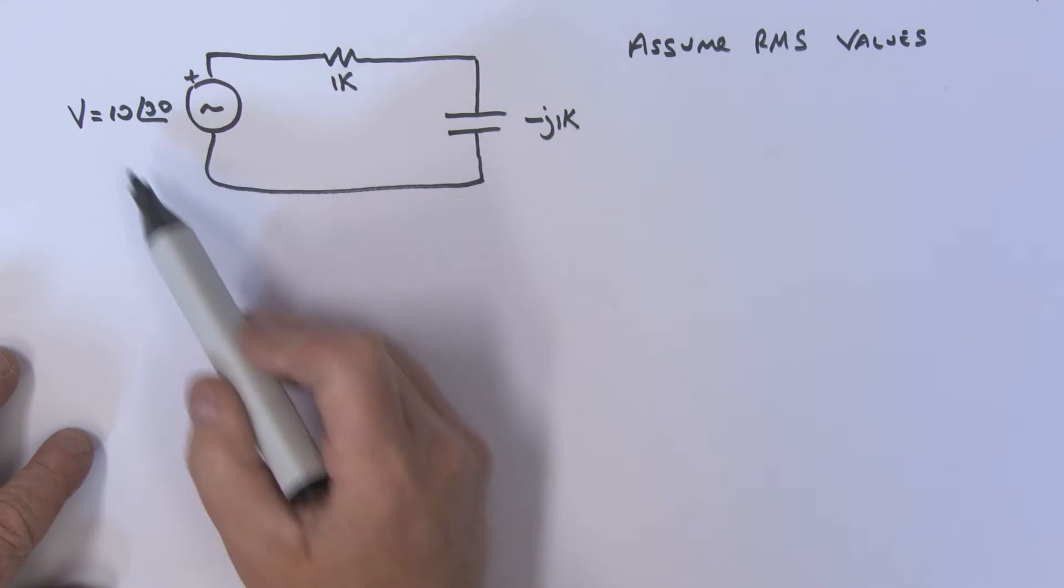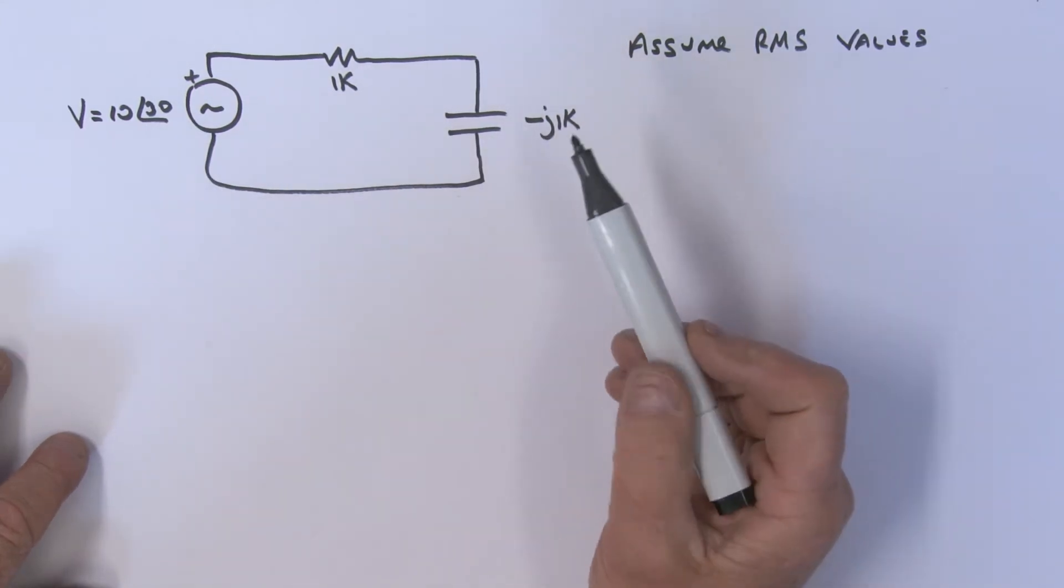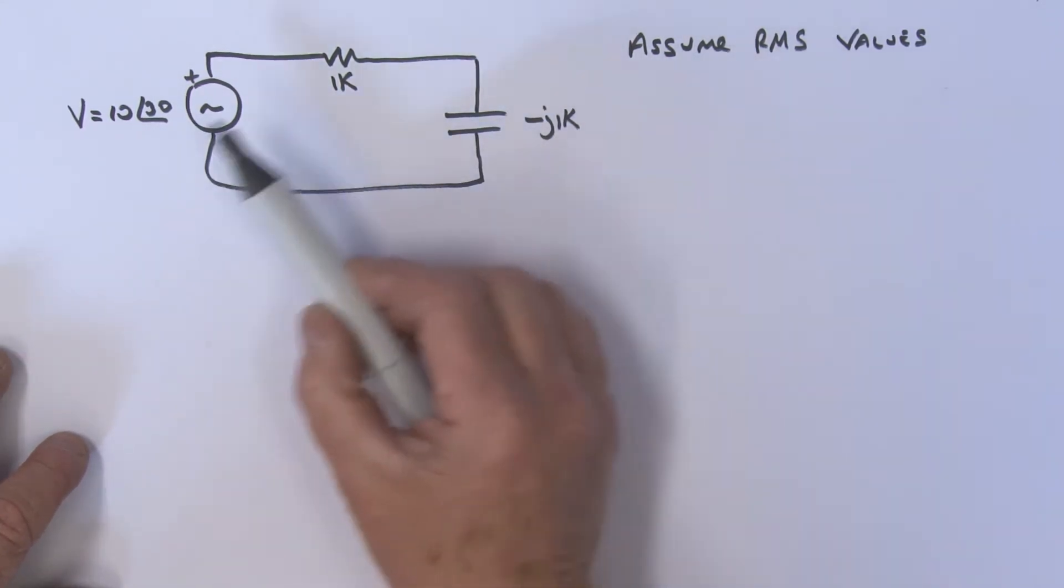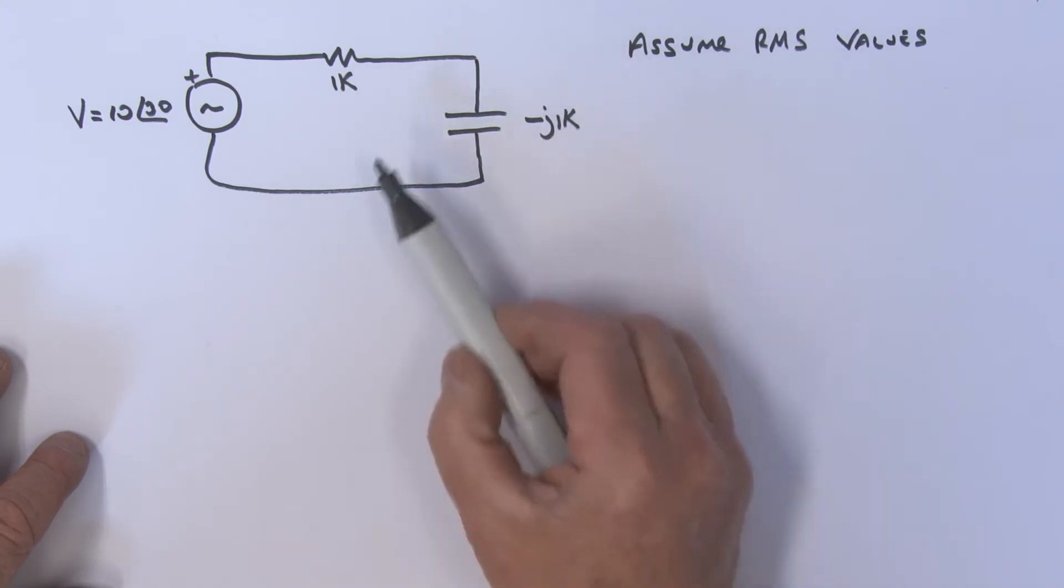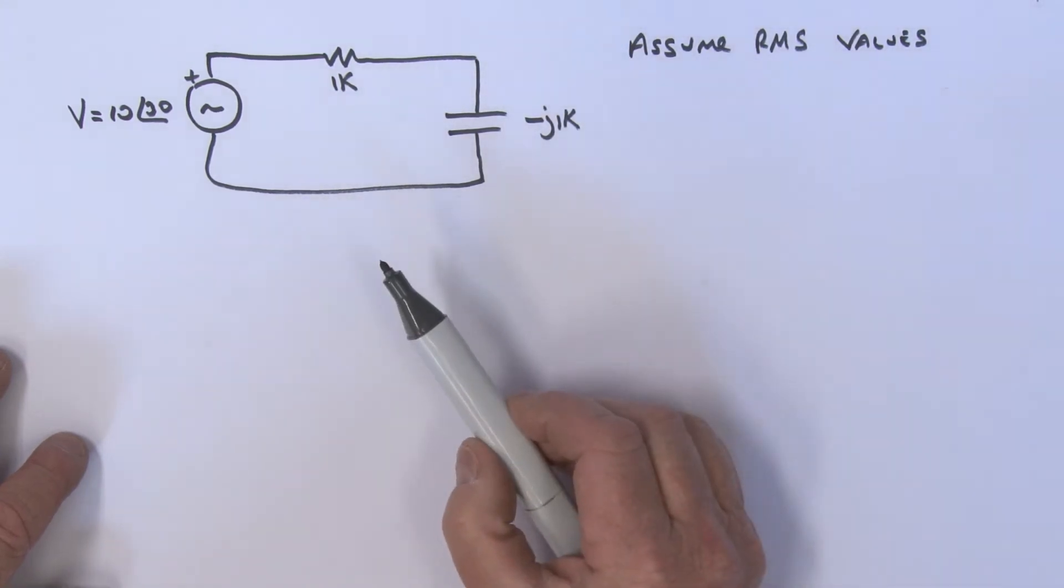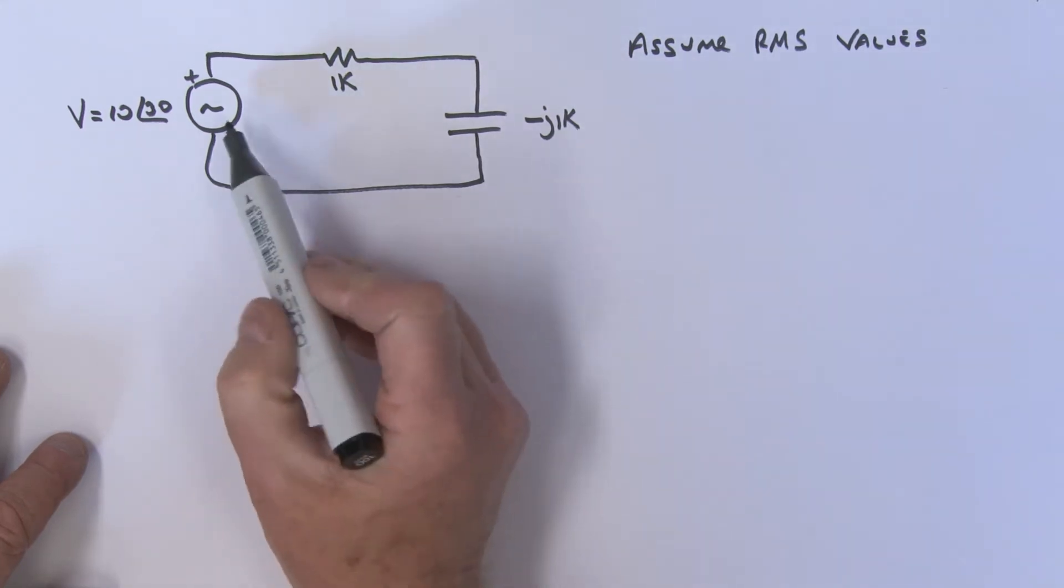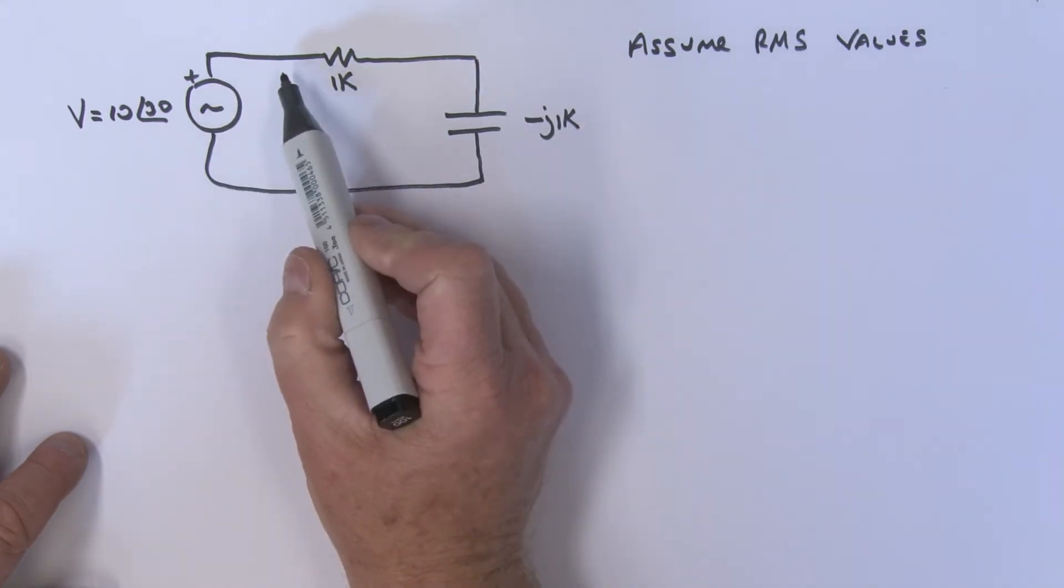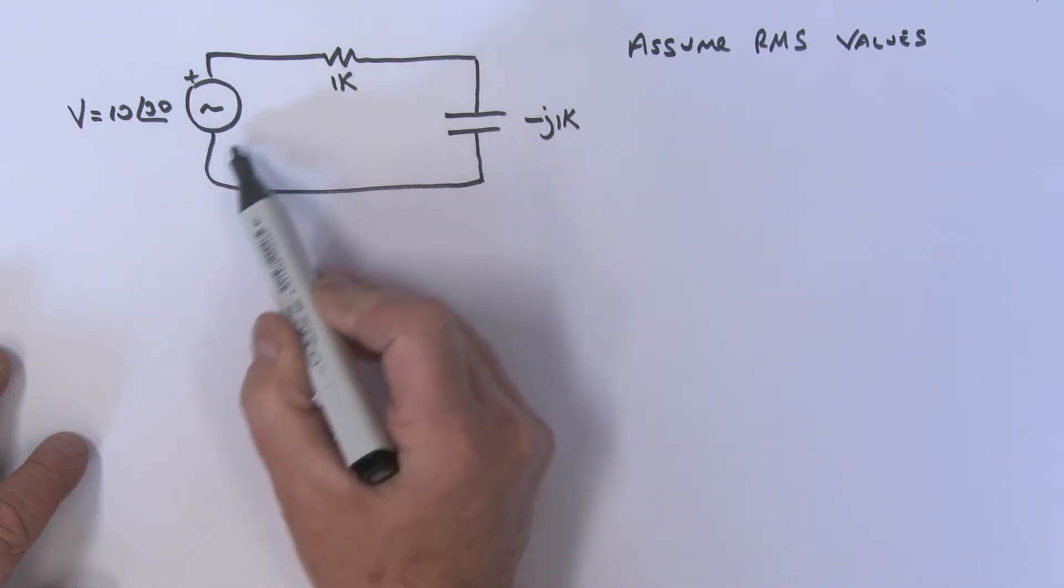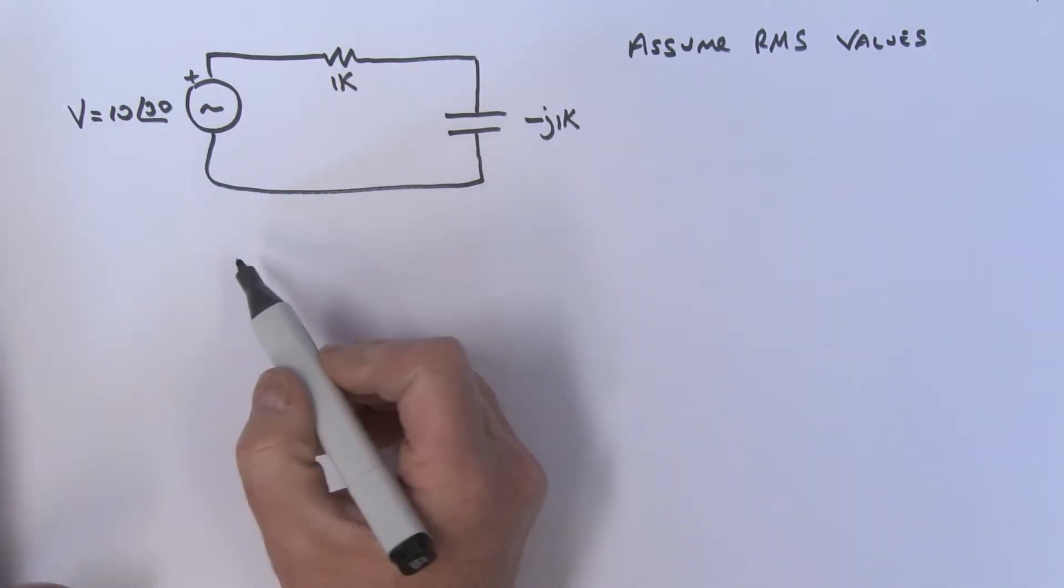Okay, this was the problem I actually left you with last time. I hope you had a chance to have a look at this. Anyway, what we'll do now is work it together. So what I want to do first is actually find the total impedance in this circuit, the impedance that this signal source over here sees.